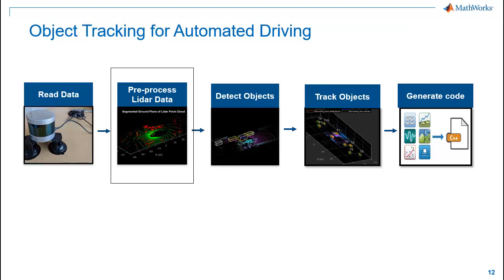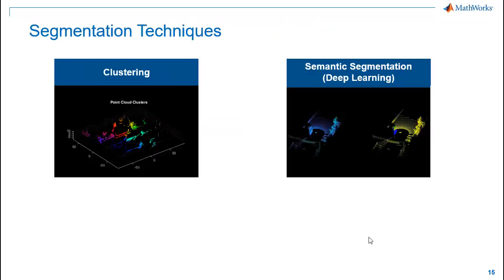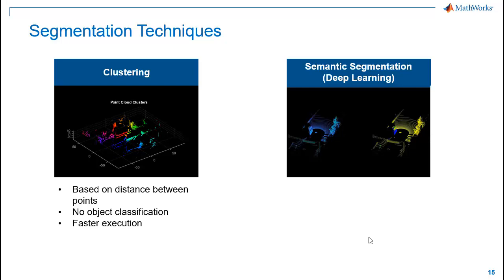Now that we have preprocessed our point cloud data, as a next step, we will move on to object detection. There are two ways with which you can detect objects and create bounding boxes for tracking. The first method is segmenting the point cloud and then fitting oriented bounding boxes around each object. In the second method, we will use object detection networks like PointPillars which can detect objects and create bounding boxes around them. There are two techniques to segment the point cloud: using clustering algorithms and semantic segmentation using deep neural networks. In clustering, we segment the point clouds based on the distance between points. This method doesn't classify points based on the objects in them, but the execution will be much faster compared to a deep learning based approach.